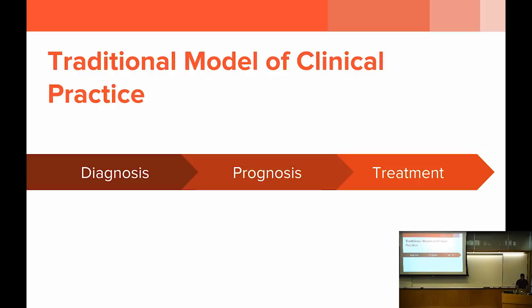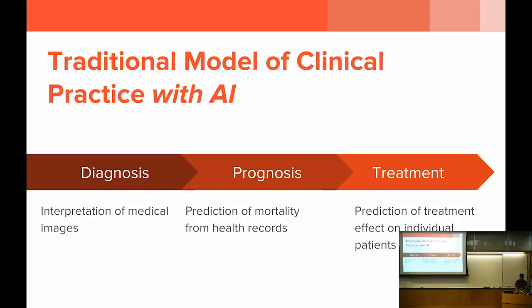The traditional model of clinical practice today can be thought about as three different steps: diagnosis, prognosis, and treatment. In diagnosis, we're concerned about asking what happened to the patient. In prognosis, we're concerned about predicting what will happen to the patient. And in treatment, the doctor is concerned about deciding what action to take. With AI applications, we will see all three of these steps being transformed over time. Imagine a world in which a machine is responsible for interpretation of medical images, for diagnosis, prediction of mortality from electronic health records, and prediction of a treatment specific to an individual rather than a treatment common for all people.